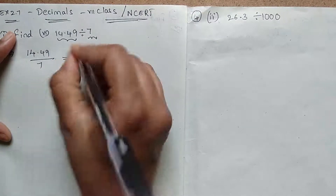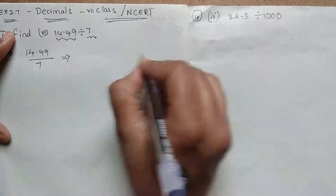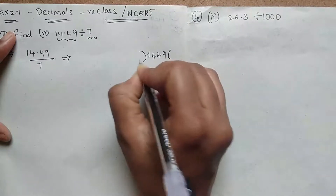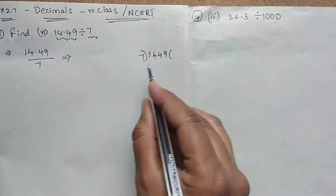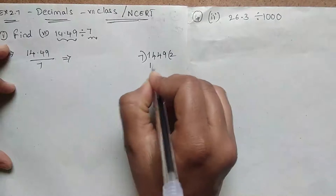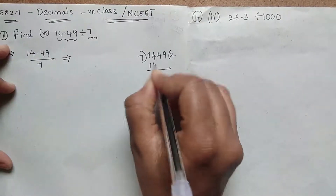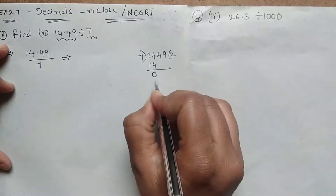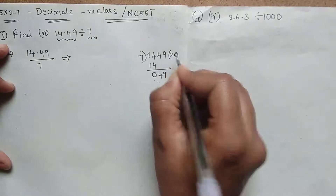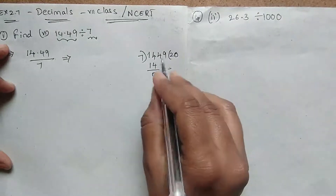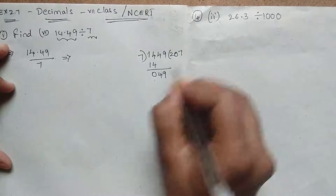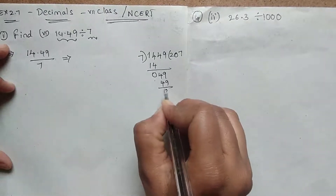We have to do it in a simpler way — keep 7 here. Now 7 twos are 14, here we have 0, we don't have anything, that's why for 49 we have to keep it 0. Now 49: 7 sevens are 49, remainder is 0.